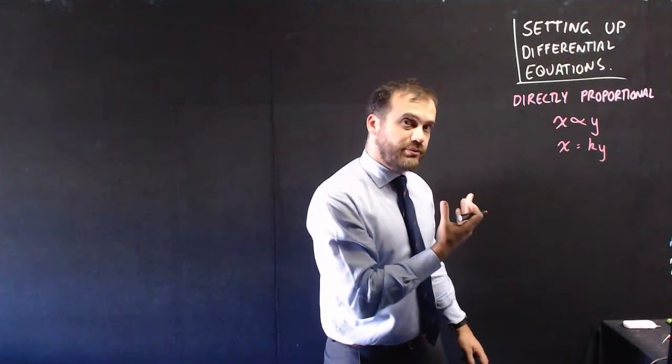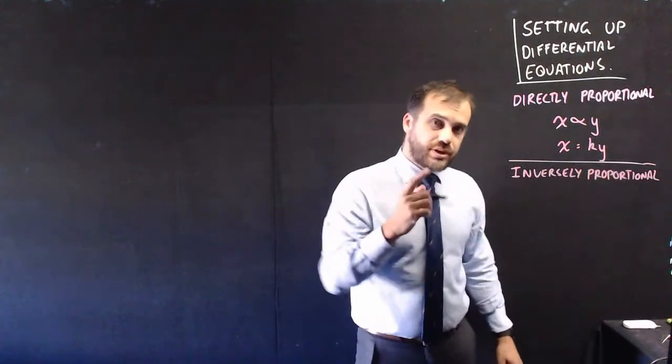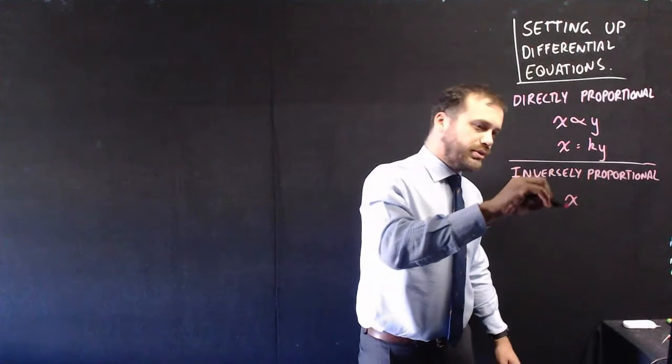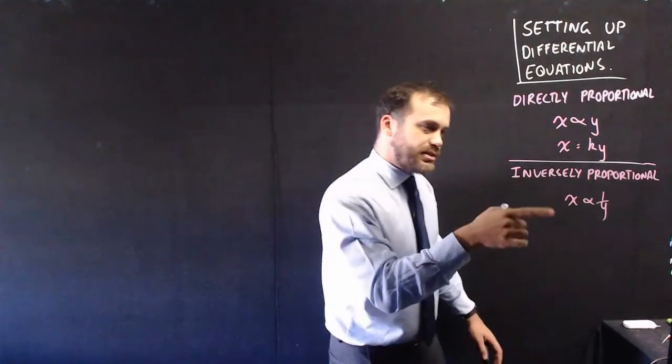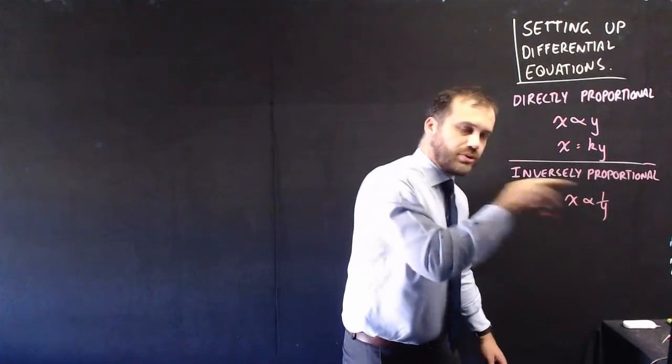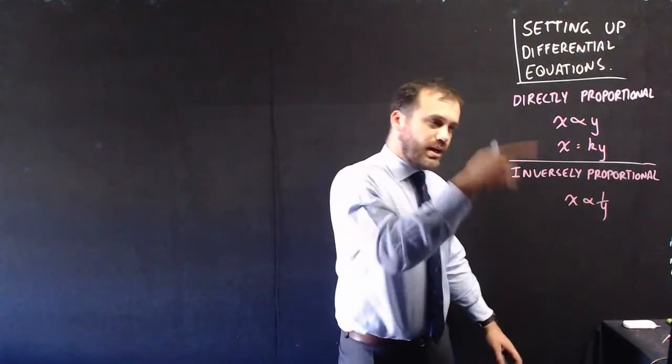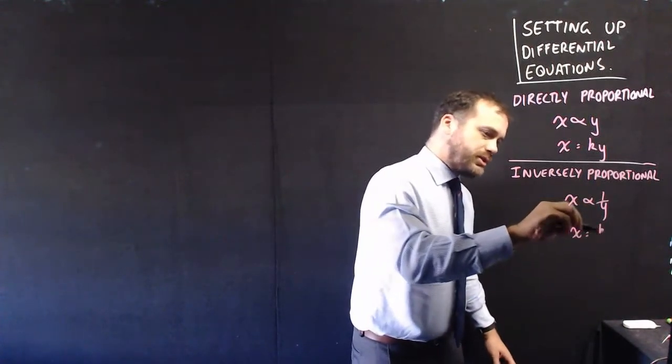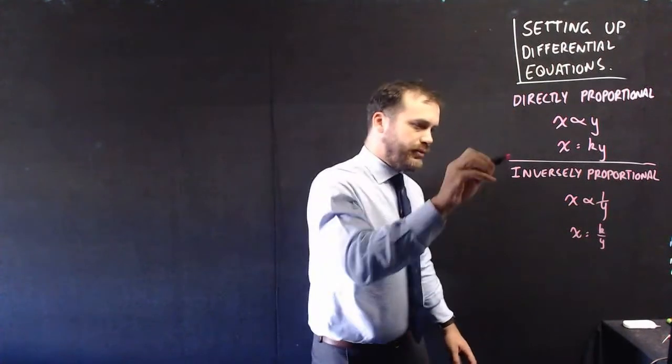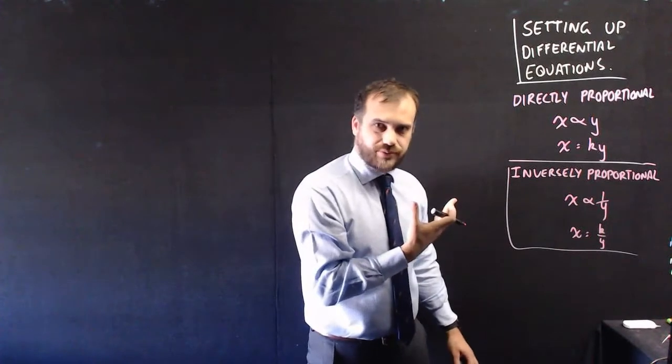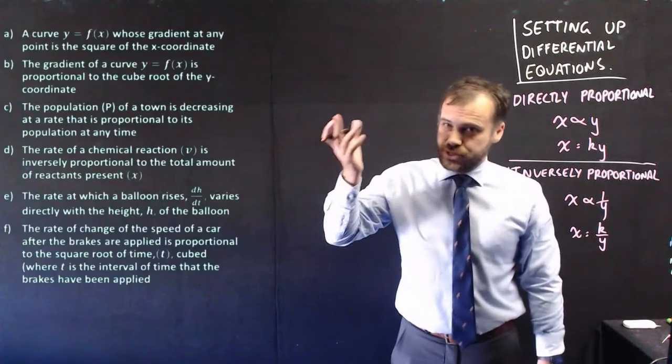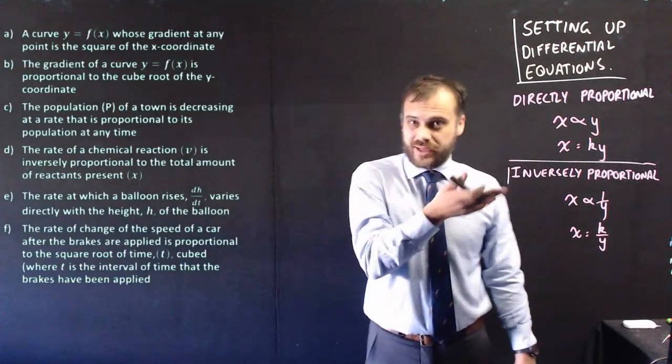Now we also have inversely proportional. Two things are inversely proportional, and we write it as 1 over y. This says that x is inversely proportional to y. And when we write that as an equation, we get x equals k over y. Alright, that's all the information we need to get started on this stuff. So now that I've set that up, our first question here doesn't really have a lot to do with that at all.